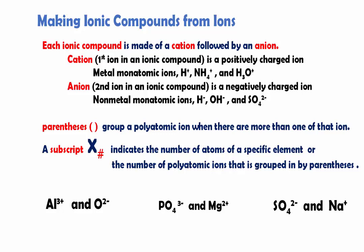In the other lesson, we talked about how ionic compounds are always made of cations followed by an anion. A cation is a positive charge which consists of metals, monatomic ions, hydrogen that has lost electrons, ammonium or hydronium. Those are the common cations.